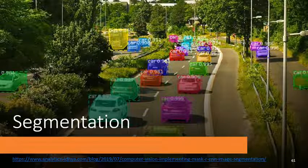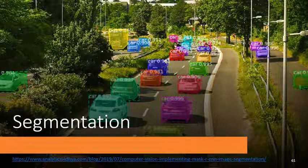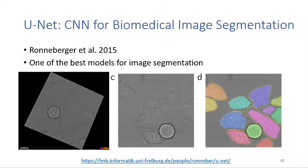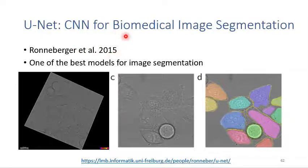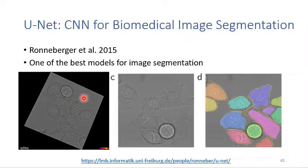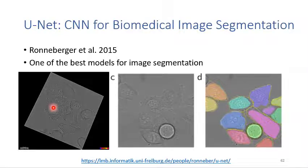Let's talk about segmentation now. Segmentation classifies each pixel into a different class. This task is very important in autonomous driving because autonomous cars need to know where the road is and which is the pedestrian. One of the most important segmentation models is UNET, proposed in 2015. The authors use UNET to segment biomedical images — cells under a microscope. It's one of the best models for image segmentation and widely used in biomedical image segmentation.